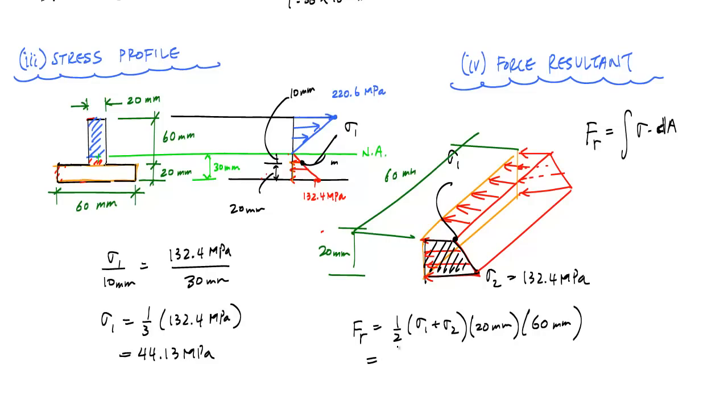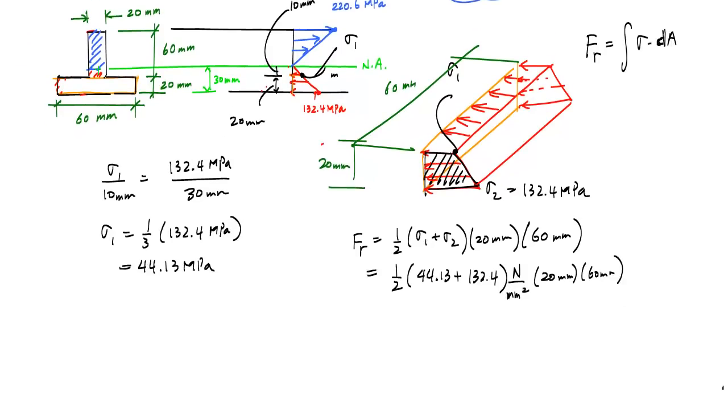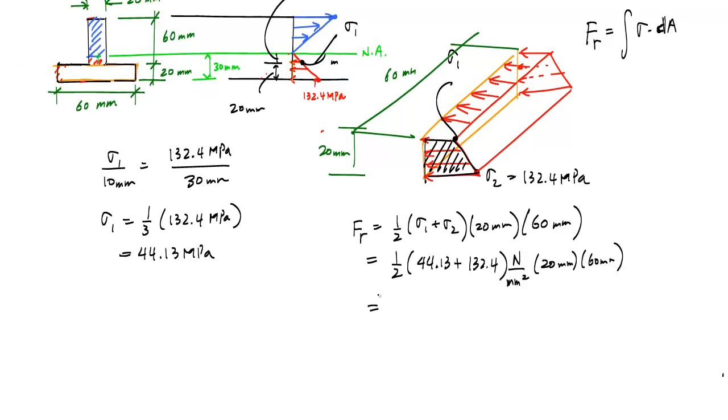Now to calculate the force resultant, it's just one-half, 44.13 plus 132.4 megapascals, which is newtons per millimeter squared, times 20 millimeters times 60 millimeters. When you work out some numbers and substitute, this whole deal becomes 105,918 newtons, which is really better expressed in kilonewtons, 105.9 kilonewtons. That is my compressive force resultant.